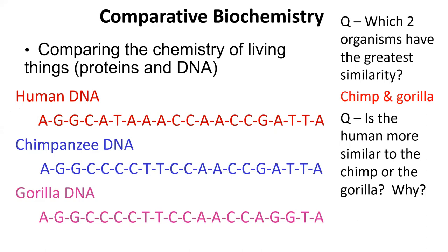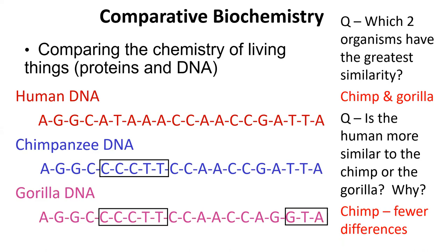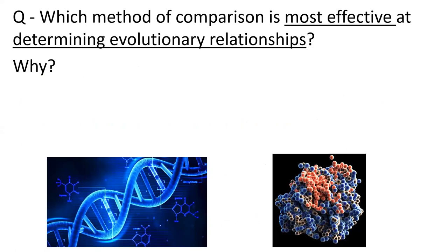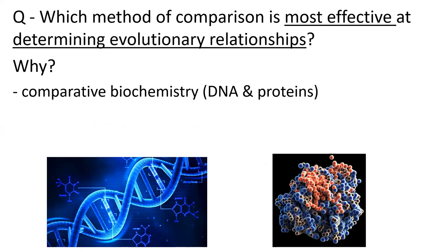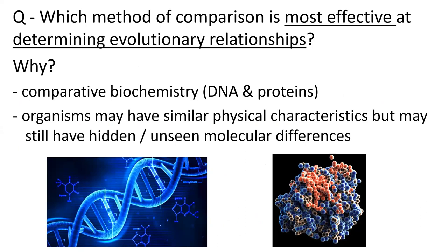But if you try to figure out who's closest to the human, you're going to see that there are more differences between the gorilla and the human. The chimp has fewer differences. And therefore, if there's fewer differences, the chimp is going to be more similar to the human in the sense that it produces very similar DNA sequences. So the most effective method of determining evolutionary relationships is to compare the biochemistry of these organisms — compare their DNA sequences and the proteins they produce. We do rely mostly on molecular evidence now that we have that technology.